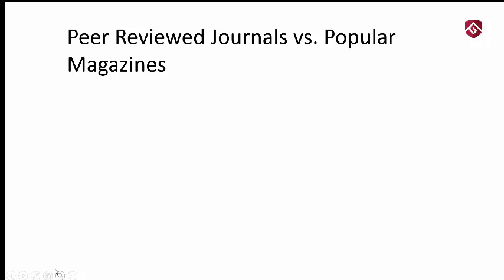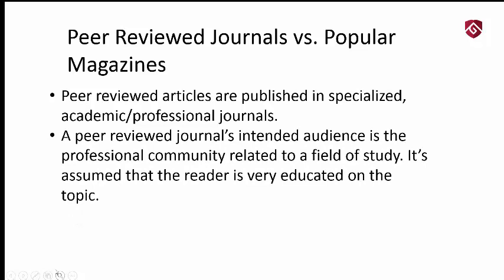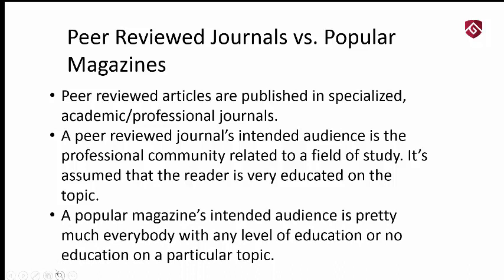Peer-reviewed journals versus popular magazines. You're probably very familiar with popular magazines or news websites. Peer-reviewed articles, however, are published in specialized academic and professional journals. You will very rarely find these journals on any kind of newsstand, in a Barnes and Noble, or even through Amazon. They're very specialized, published for a special audience. A peer-reviewed journal's intended audience is a professional community related to a field of study.